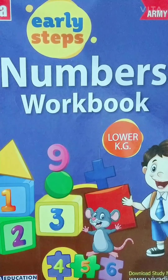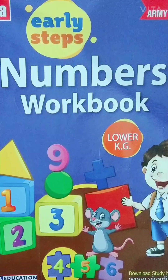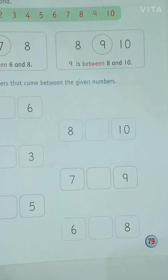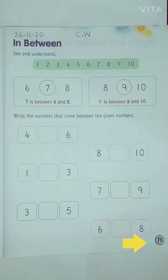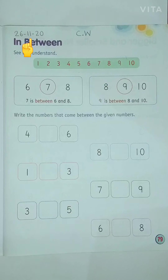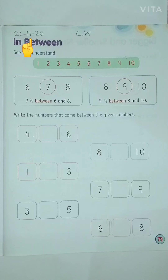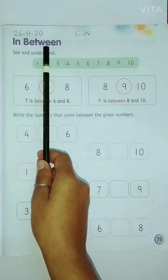Now, please open page number 79. So, children, first of all, we will write today's date. And today's date is 26th November 2020. And then we will write CW classwork.